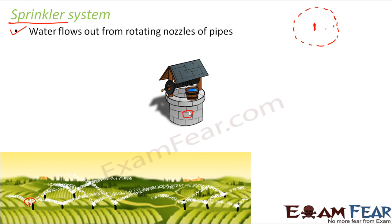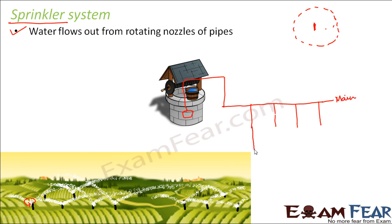There is a motor here, and therefore the water is being brought up. Once the water is brought up, it is applied to the main pipeline. From this main pipeline, there are many perpendicular pipes connected to it. On each of these perpendicular pipelines, you have rotating nozzles, and from these rotating nozzles the water comes out.